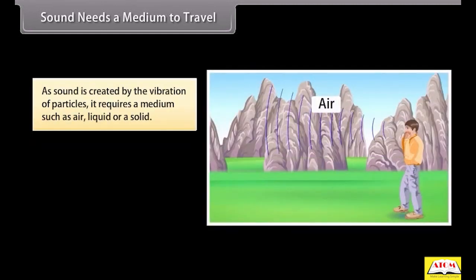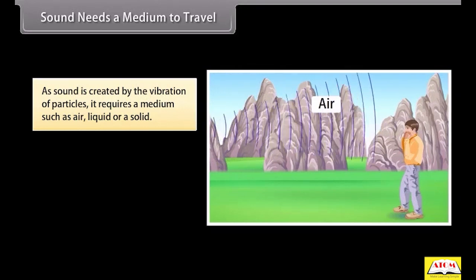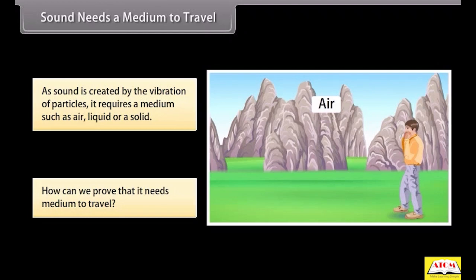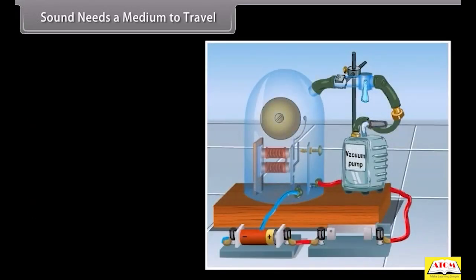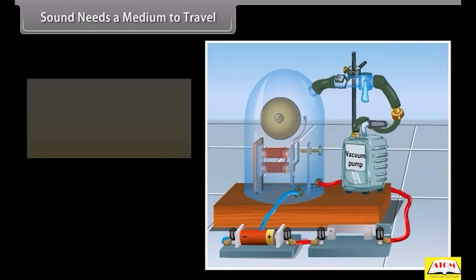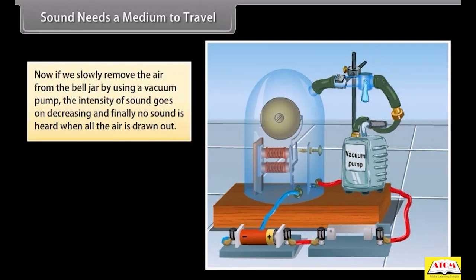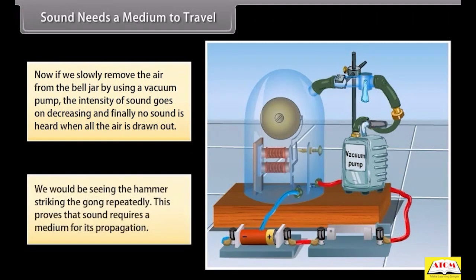Sound needs a medium to travel. As sound is created by the vibration of particles, it requires a medium such as air, liquid, or a solid. But how can we prove that it needs medium to travel? Let's see. Look at this figure. Here, an electric bell is suspended inside an airtight glass bell jar connected to a vacuum pump. As the electric bell circuit is completed, the sound is heard. Now, if we slowly remove the air from the bell jar by using a vacuum pump, the intensity of sound goes on decreasing and finally no sound is heard when all the air is drawn out. We would be seeing the hammer striking the gong repeatedly. This clearly proves that sound requires a medium for its propagation.